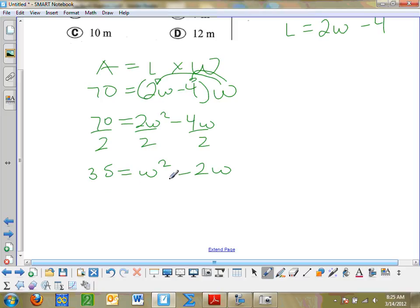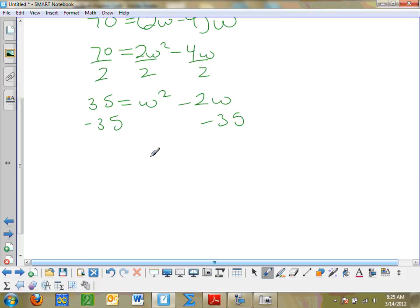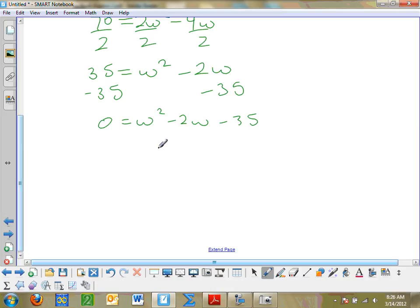And I get 35 is equal to w squared minus 2w. Now it's not wrong if you don't divide by 2. It's just the numbers are a little easier to work with if you do. And then lastly, I want to set it equal to 0. Or I could use completing the square, but usually the quadratic formula is a little bit easier. So I go ahead and subtract 35 from both sides. And I end up with 0 is equal to w squared minus 2w minus 35.